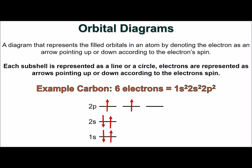In orbital diagrams, each shell is represented as a line or a circle, then filled with arrows pointing up or down to represent the spin of an electron. For carbon, we can fill the orbitals from the lowest energy level to the highest. The electrons in the p orbital are not paired according to Hund's rule.